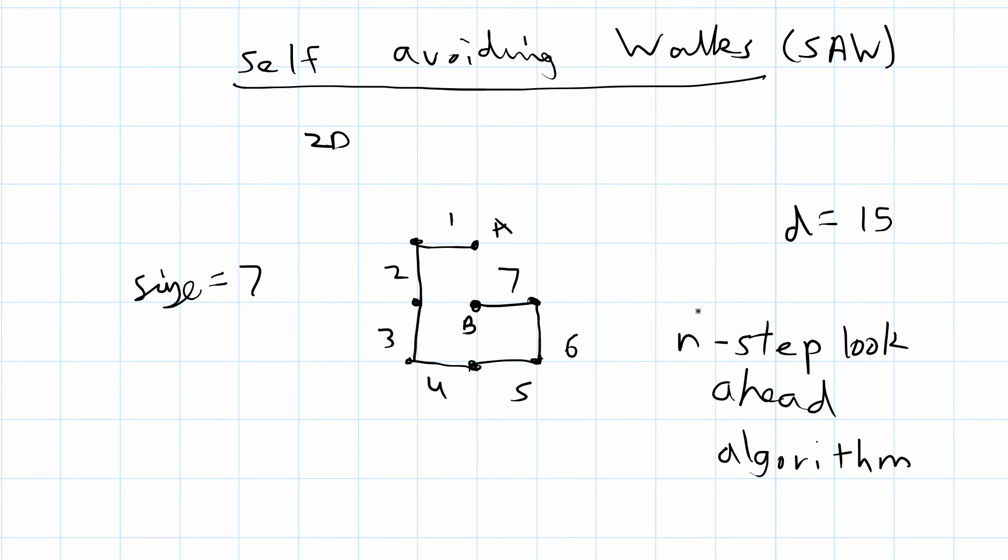You can look three steps ahead, four steps ahead. You can increase the n, but it becomes more computationally difficult for large n to keep looking ahead before you have the random walk move.